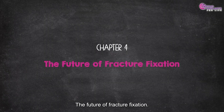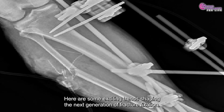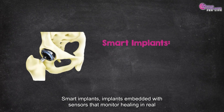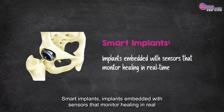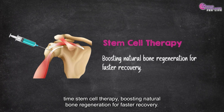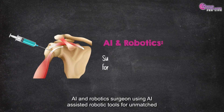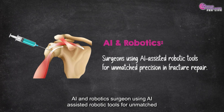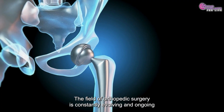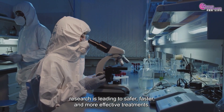Chapter 4: The Future of Fracture Fixation. Here are some exciting trends shaping the next generation of fracture fixation: Smart Implants embedded with sensors that monitor healing in real-time; Stem Cell Therapy, boosting natural bone regeneration for faster recovery; and AI and Robotics, with surgeons using AI-assisted robotic tools for unmatched precision in fracture repair. The field of orthopedic surgery is constantly evolving, and ongoing research is leading to safer, faster, and more effective treatments.